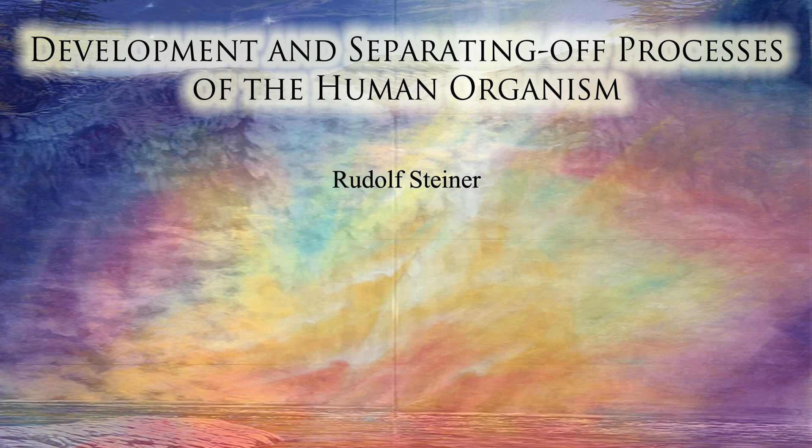Let us first of all consider a solid part, for example a bone structure. It is secreted from the semi-fluid element. The I organization is active in this process of secretion. Anyone can see this if they follow the development of the skeletal system. It evolves to the degree to which the individual gains his human form as an expression of the I organization in the embryonic and childhood periods. The conversion of protein, which is the basis of this, initially involves removal of the astral and etheric foreign forces from the protein.